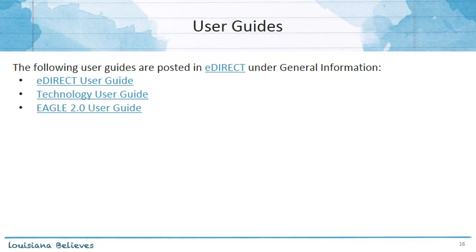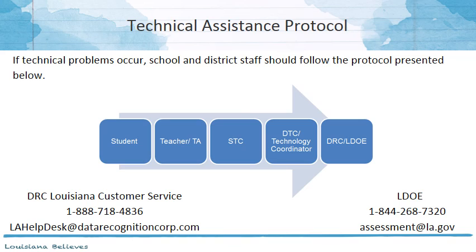Additional support can be found in our eDirect User Guide, as well as our Technology User Guide and the Eagle 2.0 User Guide. If you have any questions, you can always reach out following that protocol for district and school staff. Additionally, the DRC Customer Service line and email are available, and you can email any questions to assessment@la.gov. This concludes our overview of how to access and navigate the Student Groups feature.